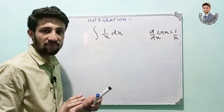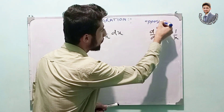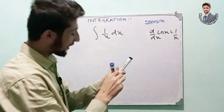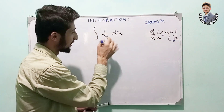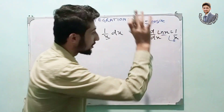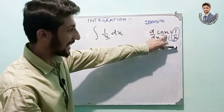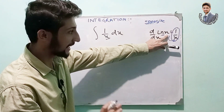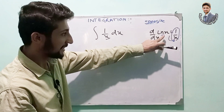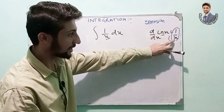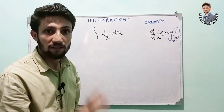Differentiation and integration are opposites of each other. Whenever I differentiate ln x I get 1/x, and whenever I integrate 1/x I should get ln x. That's what it means that they are opposite. So: integrating 1/x gives ln x, and differentiating ln x gives 1/x.